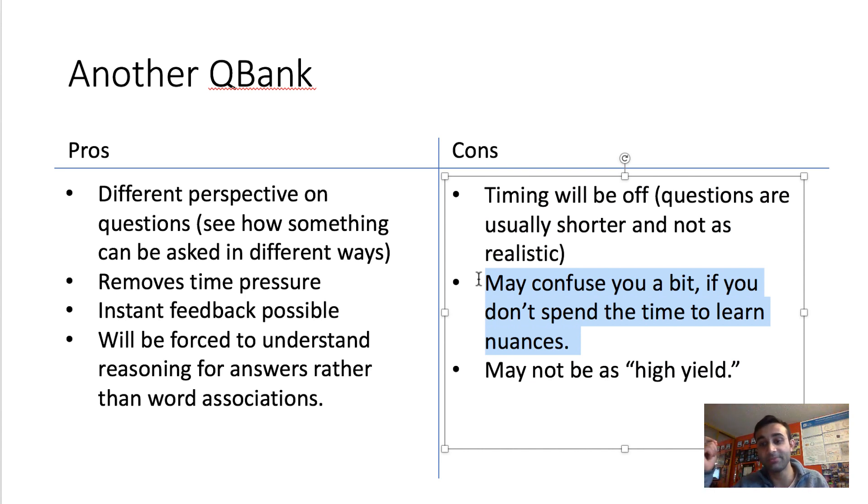The second con is sometimes these other QBanks can confuse you a bit. And if you don't spend the time to understand the nuances, then you may end up getting confused. Like for example, Amboss may ask you a question about tertiary syphilis. And that question may have a completely different answer than the tertiary syphilis question that you got asked on UWorld. But the reason for that is because Amboss may be asking it from another angle. And if you don't spend time to understand that angle, you may just be like, why is it sometimes this answer and sometimes this answer? I'm just confused, right?